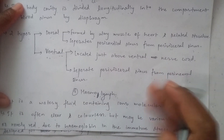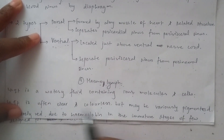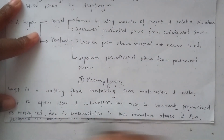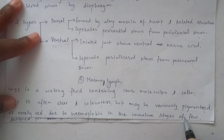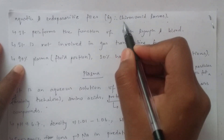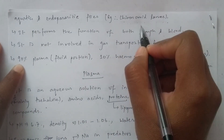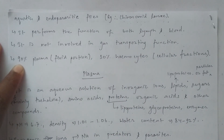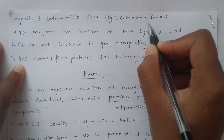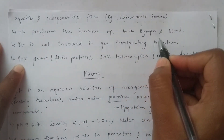Hemolymph contains water, ions, molecules, and cells. It is often clear and colorless, but may be variously pigmented, or really red due to hemoglobin, in the immature stages of a few aquatic and endoparasitic flies — for example, chironomid larvae. In those insects, the hemoglobin gives a red pigment to the hemolymph.